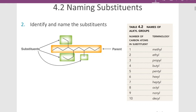Substituents are named very similarly to the parents — instead of the -ane ending, we put -yl on them. So one carbon is methyl, two carbons is ethyl, three is propyl, four is butyl, five is pentyl, six is hexyl, seven is heptyl, eight is octyl, nine is nonyl, and ten is decyl. The parent chain here is 1, 2, 3, 4, 5, 6, 7, 8, 9, 10 — so this is a derivative of decane.